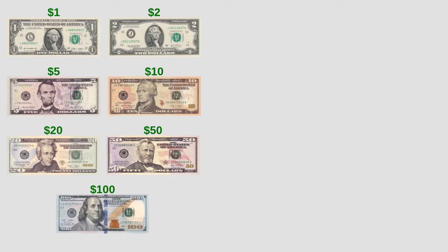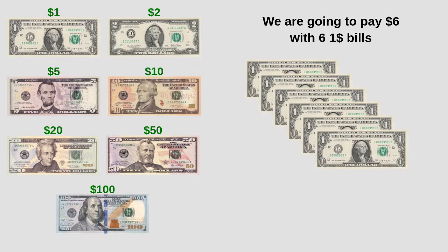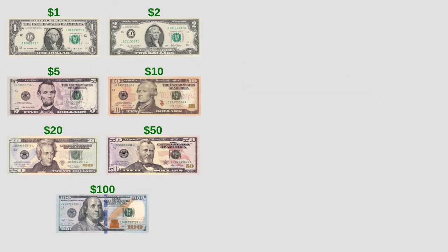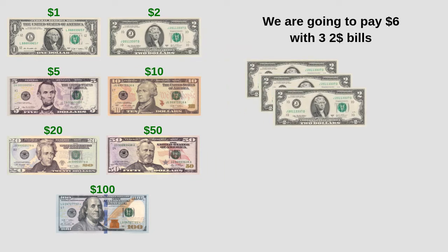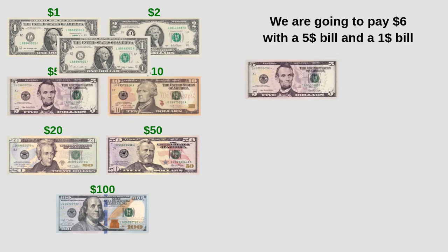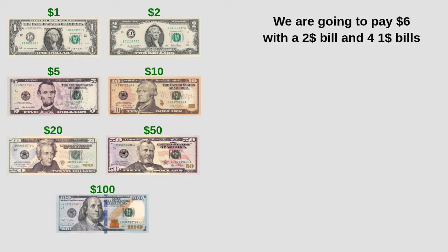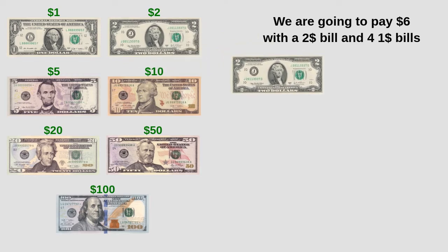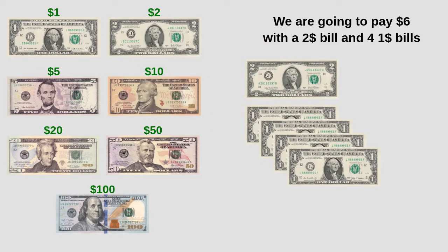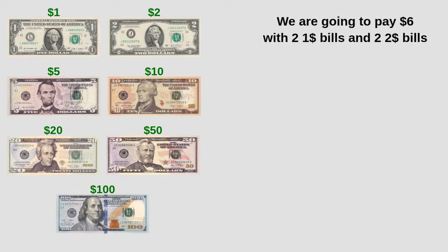Imagine that we want to buy something that costs six dollars. We have five options to pay. We can pay with six one-dollar bills, or with three two-dollar bills, or with a five-dollar bill and a one-dollar bill, or with a two-dollar bill and four one-dollar bills, or with two one-dollar bills and two two-dollar bills.